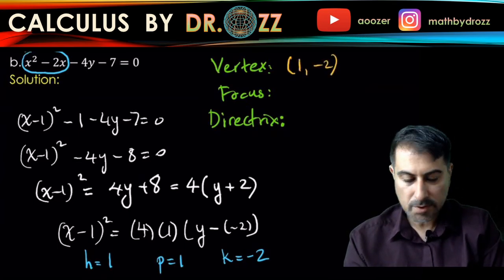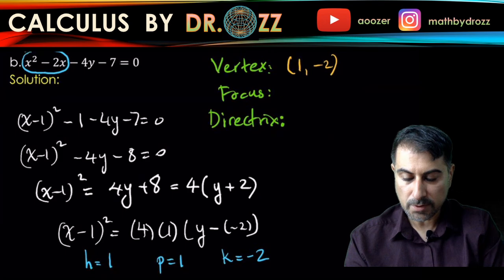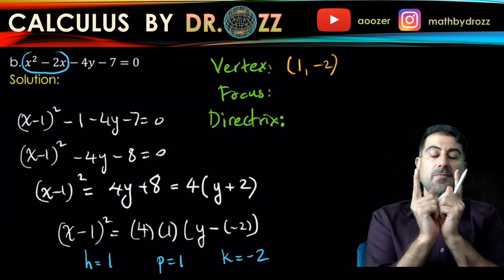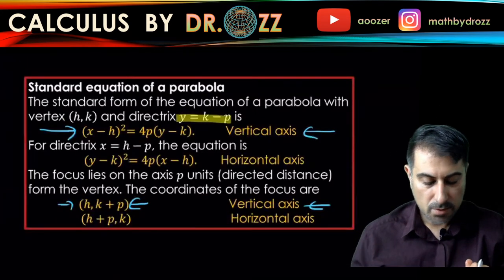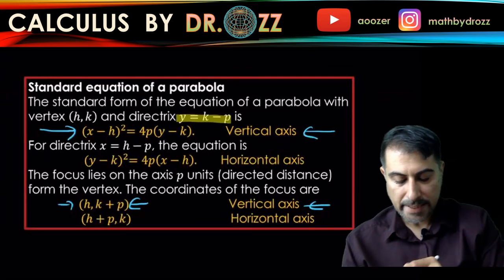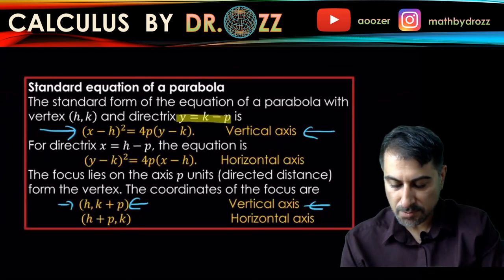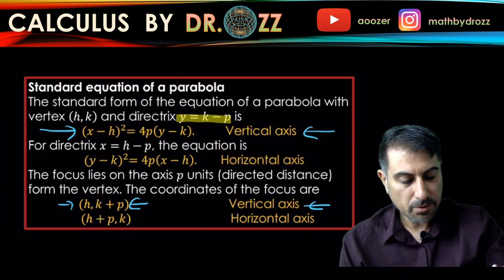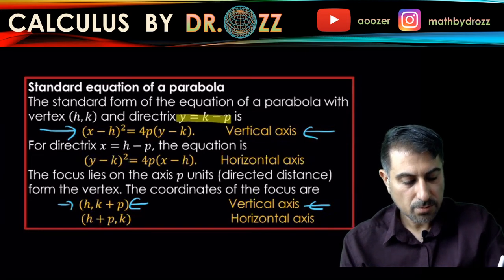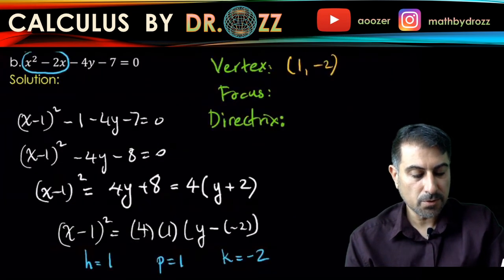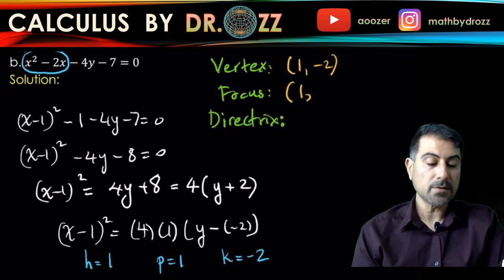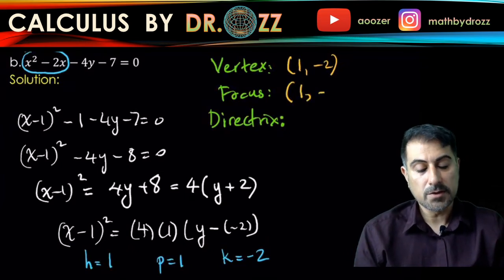Let's look at the coordinate of the focus. Since p equals 1, the distance between the vertex and the focus is 1. So h, k plus p: h is 1, k plus p equals negative 2 plus 1, so 1 and negative 1 is the location of the focus.